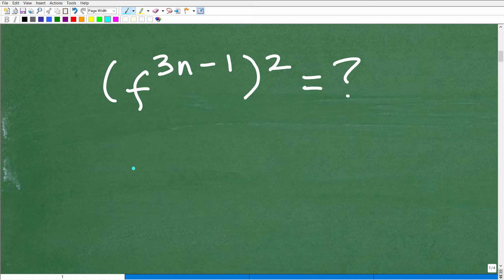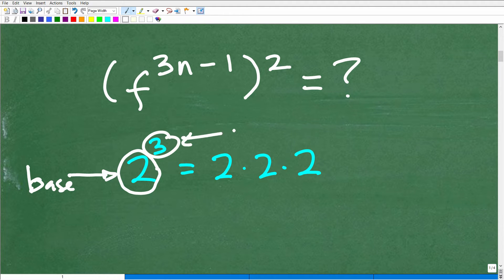But before I even show you this, let's just get some terminology down. Let's say you had two to the third power. What does that mean? Well, it means take two and multiply it by itself three times: two times two times two. So that's two to the third power. But we have some terms here or some definitions. This larger number down here, or two, is what we call the base. This little small number up here is called the exponent, and the entire thing is referred to as a power.